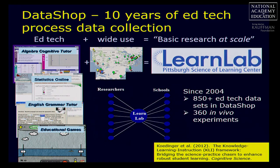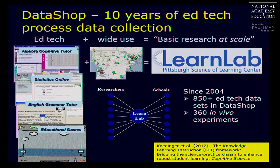DataShop was one of the key outputs of LearnLab, the Pittsburgh Science of Learning Center. A major goal was to leverage widely used educational technologies to do basic research at scale — helping researchers, especially educational and cognitive psychologists, get out of their labs and start working on studies in schools. We called these randomized trials in schools 'in vivo experiments' — not trials on products, but trials on principles. Those principles would lead to modifications in technologies, and then we'd compare whether they led to better learning outcomes, while collecting lots of data across all courses.